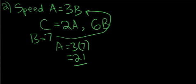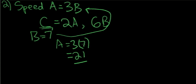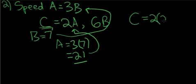So we need to find the speed of train C. Therefore we plug this in to this equation, so C equals 2 times 21. So the speed of train C equals 42, which is choice E.